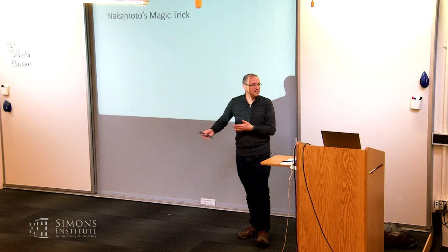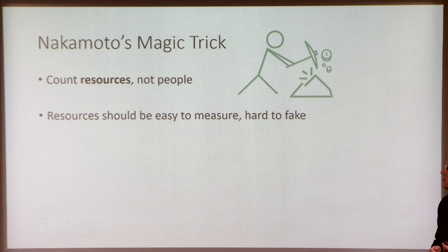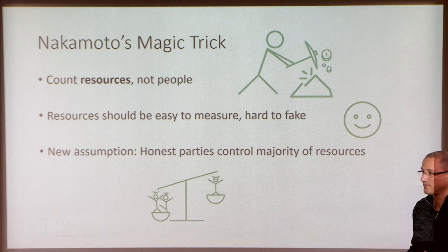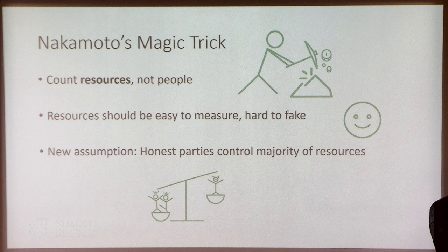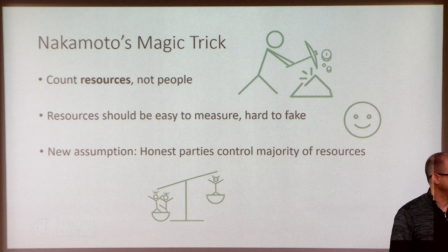This is Satoshi Nakamoto's key observation: we don't have to look at parties — we can look at resources instead. If we choose resources that are easy to measure and hard to fake, then we can switch the honest majority assumption to an honest majority of resources. In Nakamoto consensus, we elect a random leader by lottery where the probability of winning depends on relative resource. The leader determines the next block, which includes a pointer encoding the correct history so far.